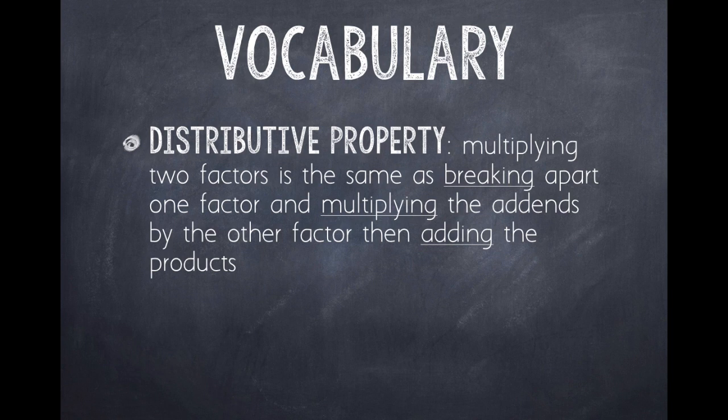Let's start with our vocabulary word. Distributive property. This means multiplying two factors is the same as breaking apart one factor and multiplying the addends by the other factor, then adding the products. And that sounds like a complicated definition, but it actually makes multiplying a lot easier.